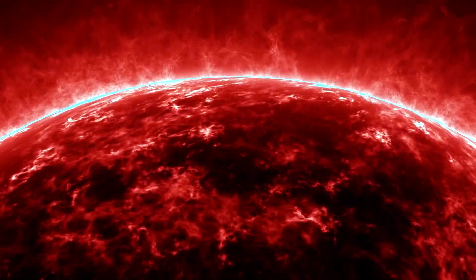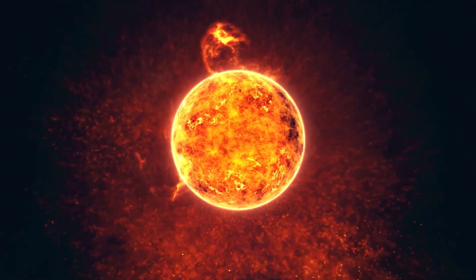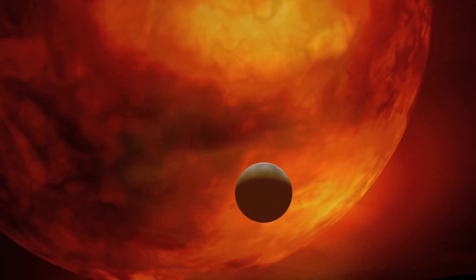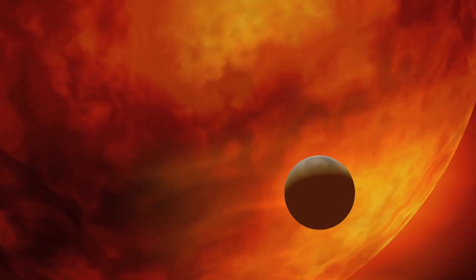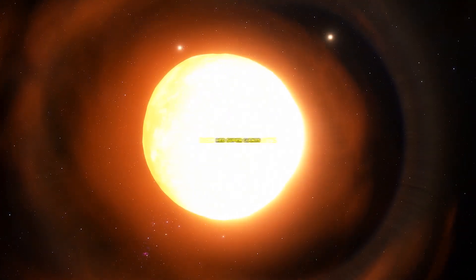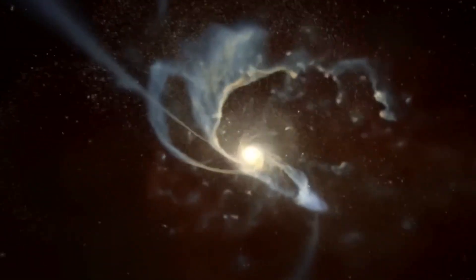The narrative becomes even more complicated when we consider the changes in Betelgeuse's gravitational field. Gravitational lensing, a phenomenon that allows us to gauge a star's gravity, suggests a fluctuation in Betelgeuse's gravitational pull. The changes could be due to internal shifts as the star braces for its explosive finale.